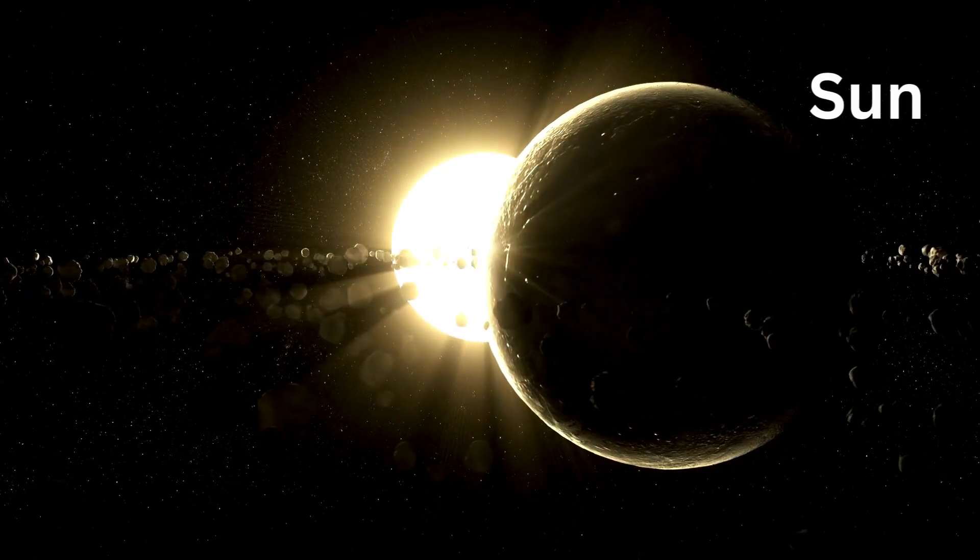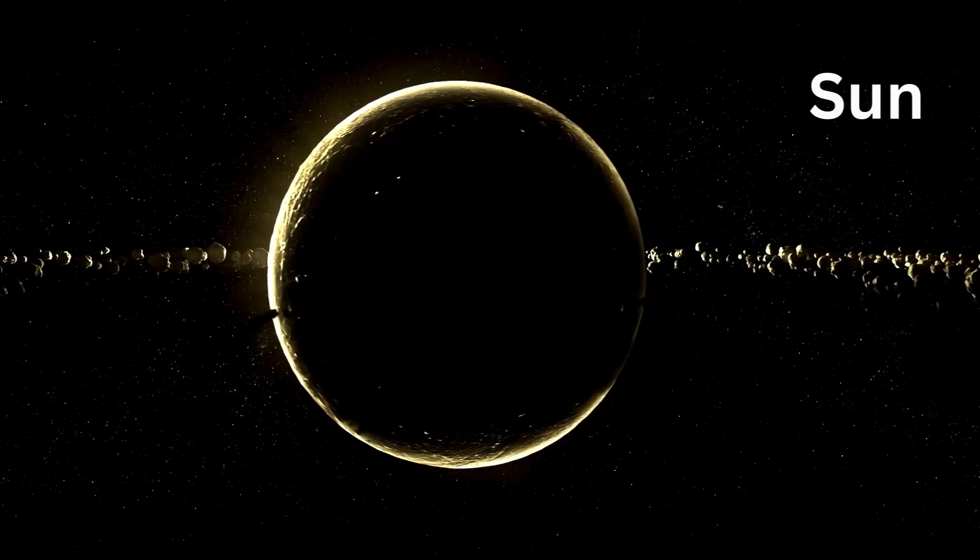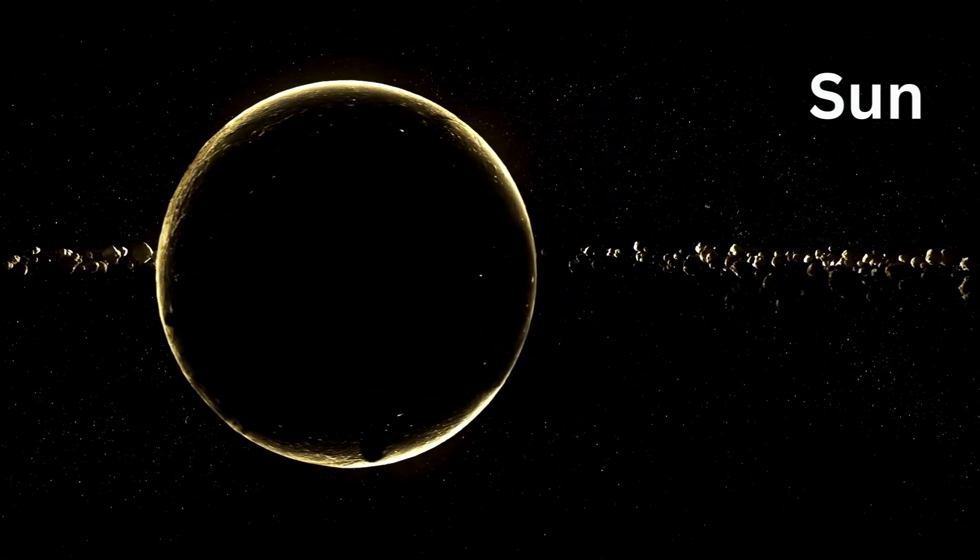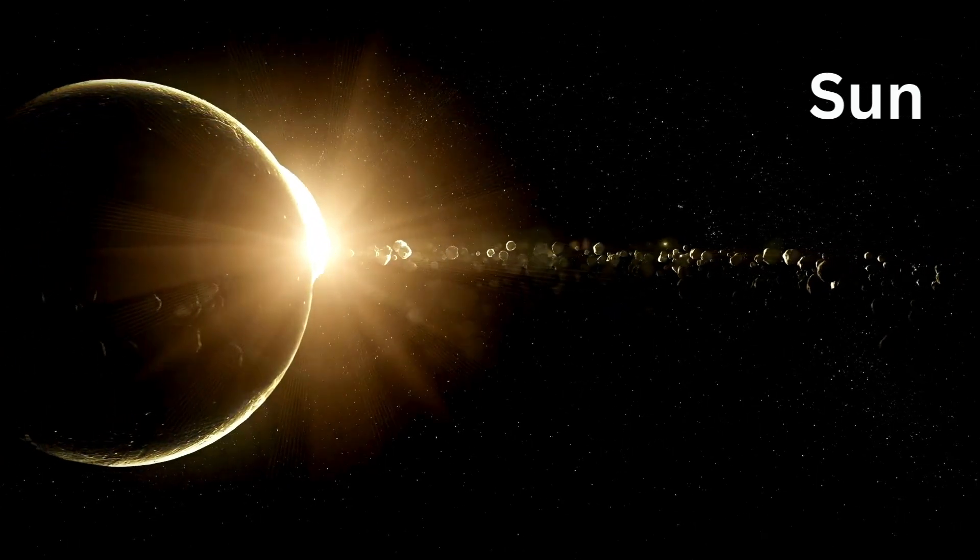First stop, the sun. It's so big, you could fit one million Earths inside of it. That's right, one million. It's our star and provides all the light and heat that keeps us warm.